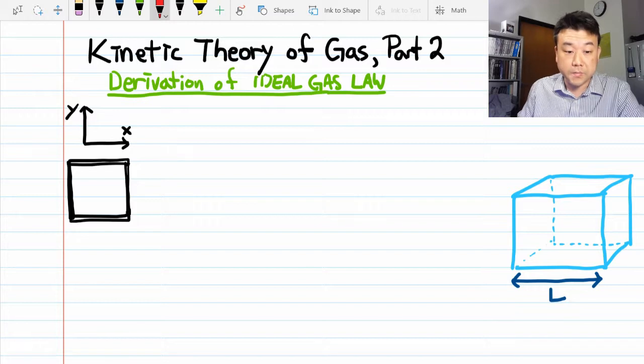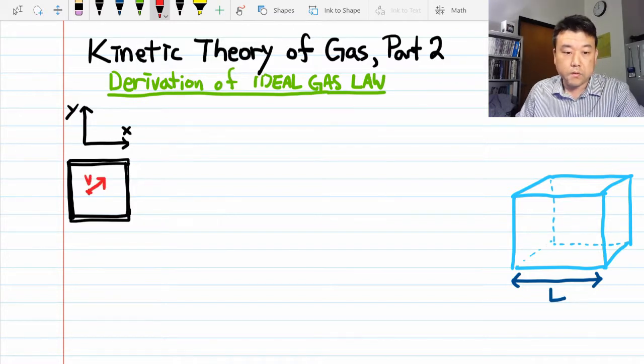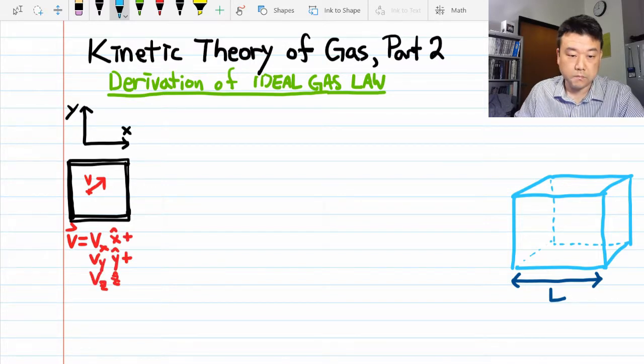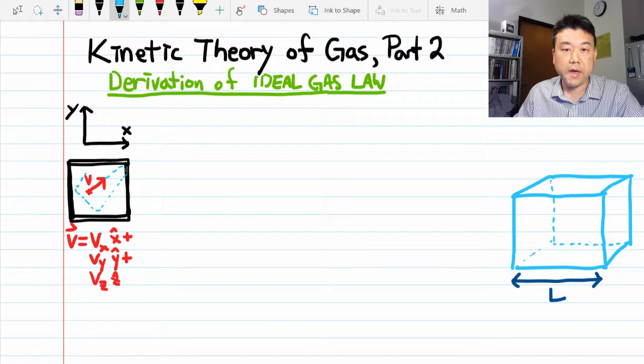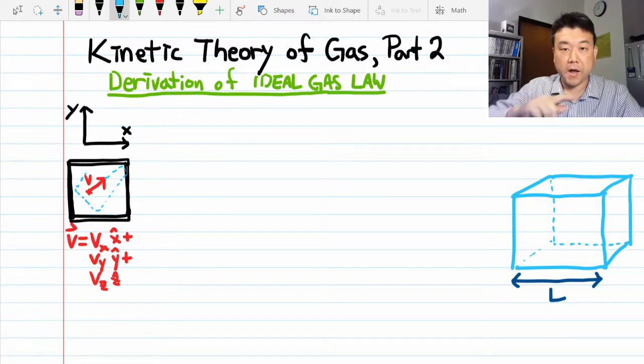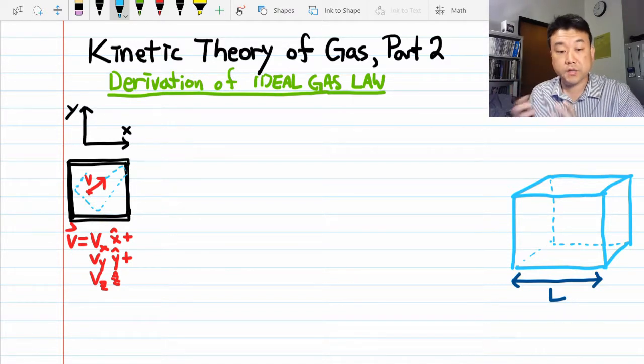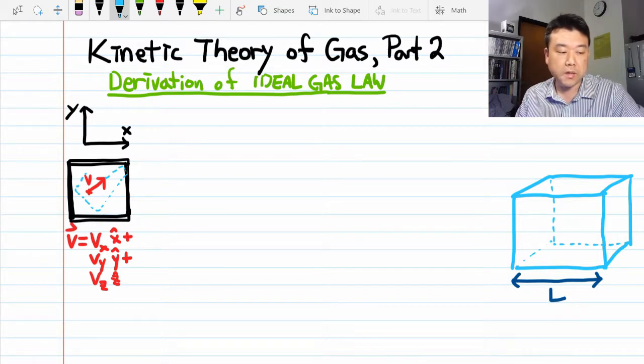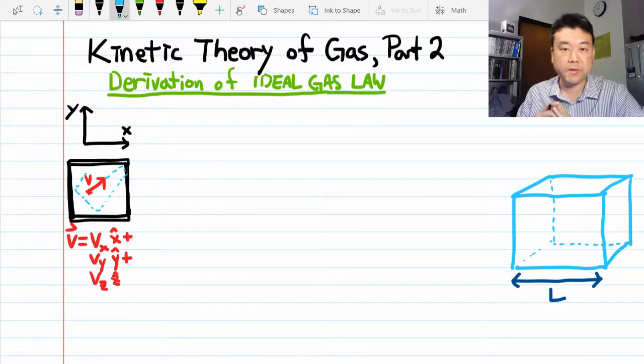Let's consider a single gas particle with some velocity V. You can express the velocity vector with x, y, and z components. And it's going to follow some trajectory bouncing around in this box. Now, as this gas particle bounces around, each time it bounces on a wall, it's going to exert a force.